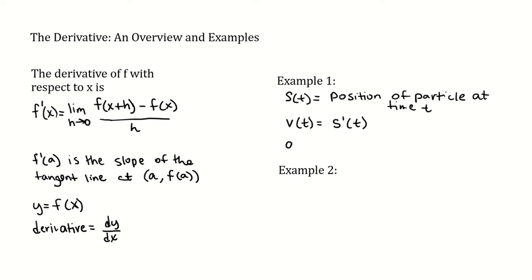And then acceleration, or a(t), is equal to the rate of change of the velocity, or the derivative of the velocity. So v prime of t, which is equal to s double prime of t.